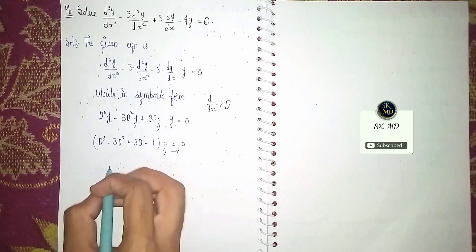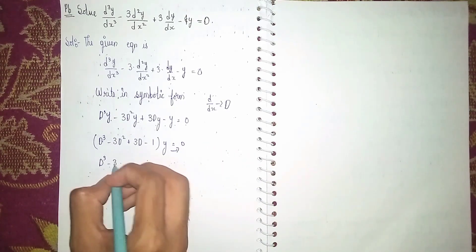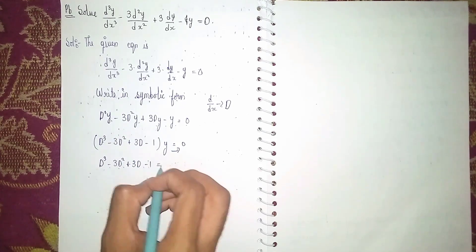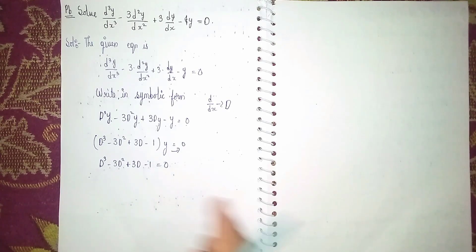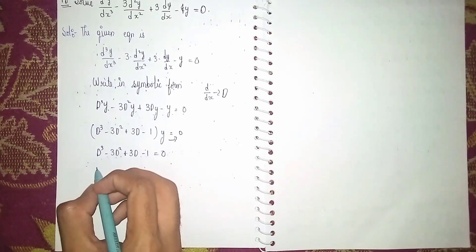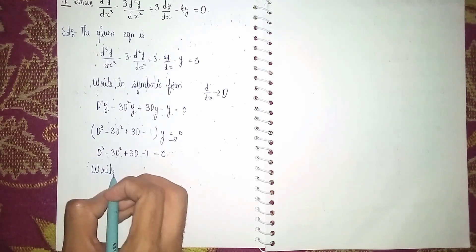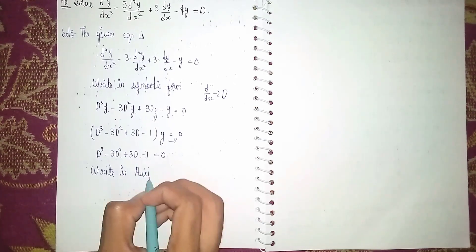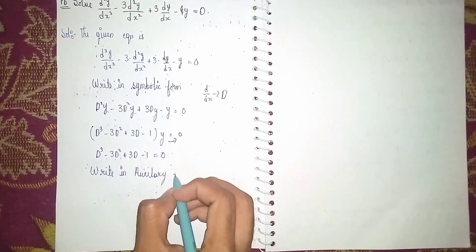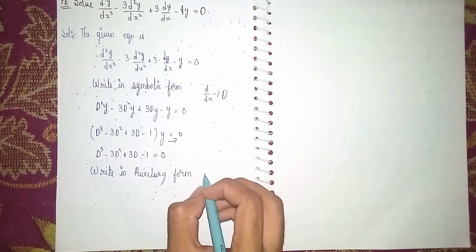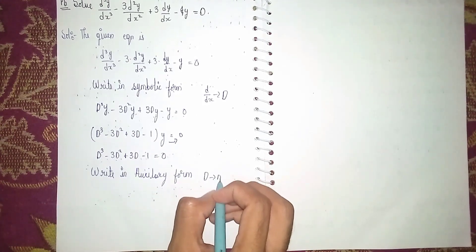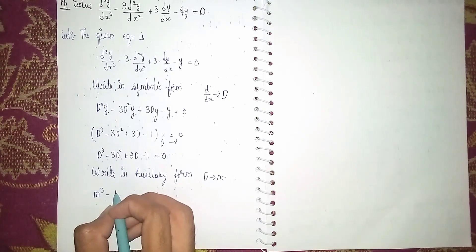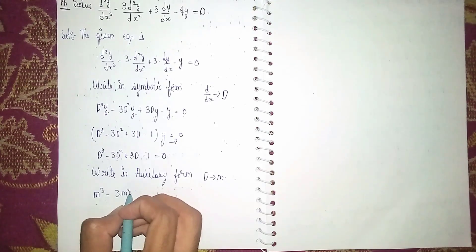Sending y to the other side, the equation becomes D³ minus 3D² plus 3D minus 1 equals zero. Now write this in auxiliary form — that is, instead of D we write m — to find the roots.